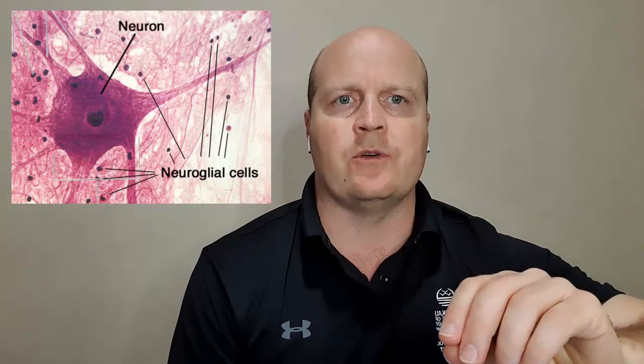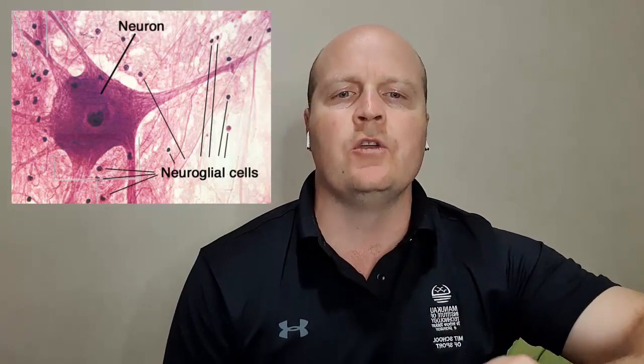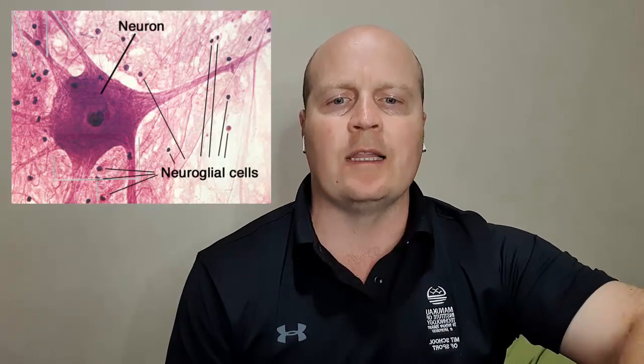Welcome to the nervous system. We're going to look at nervous tissue. Nervous tissue is made of two kinds of cells: neurons and neuroglia. Our neurons are our nerve cells and our neuroglia are the supporting cells — the glue that holds everything together.